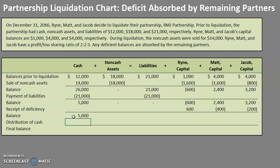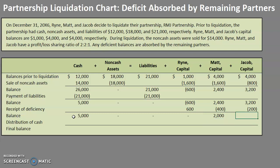Let's find new balances. We have $5,000 in cash, zero in non-cash assets, zero in liabilities, Ryan's capital has been zeroed out, Matt is left with $2,000, and Jacob is left with $3,000. Our equation balances: $5,000 equals $5,000.